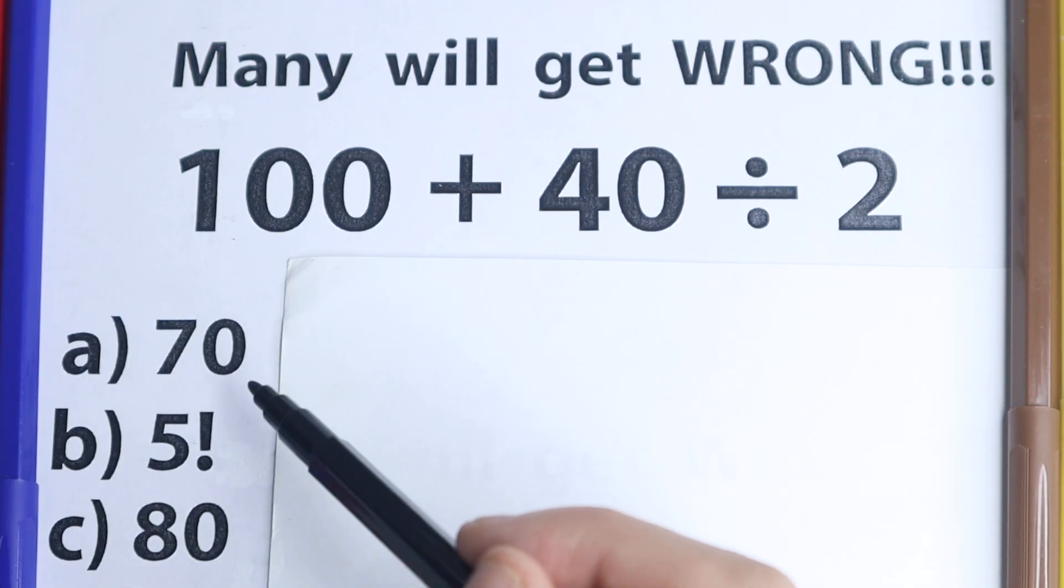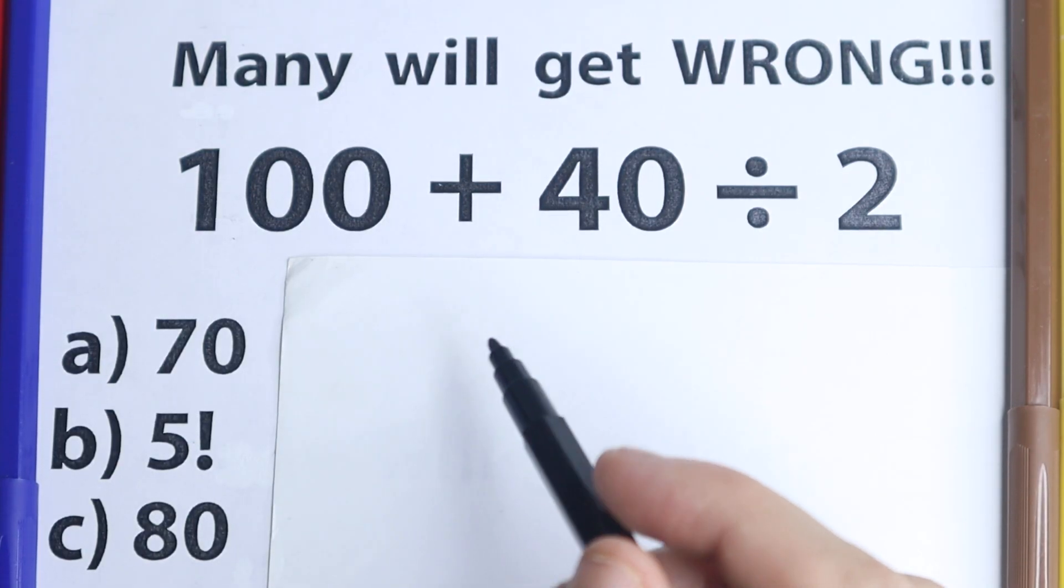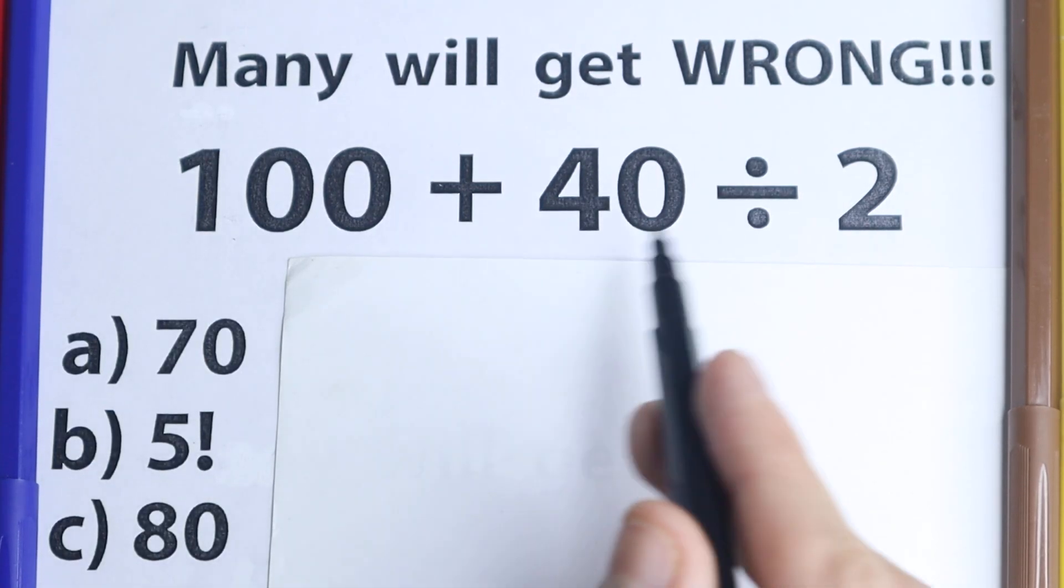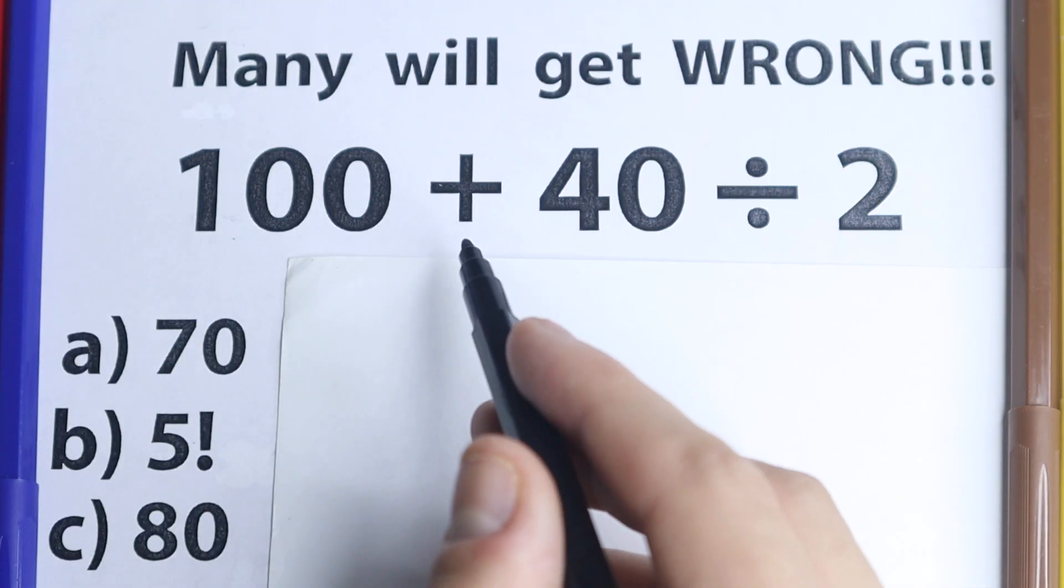What do you think is the correct answer: 70, 5 factorial, or 80? Because obviously whatever order we select is going to create a different answer, right? So we need to understand what is the correct order to do this problem.